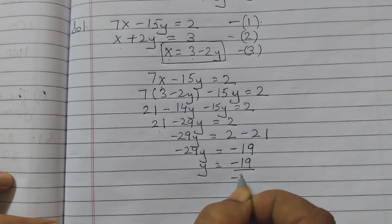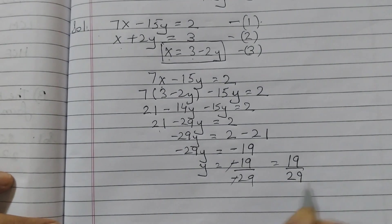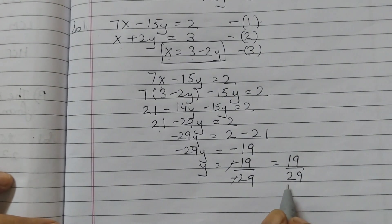Minus 19 by minus 29, the negatives cancel out and we are left with y equals 19 by 29. So this is the value of y we have got.